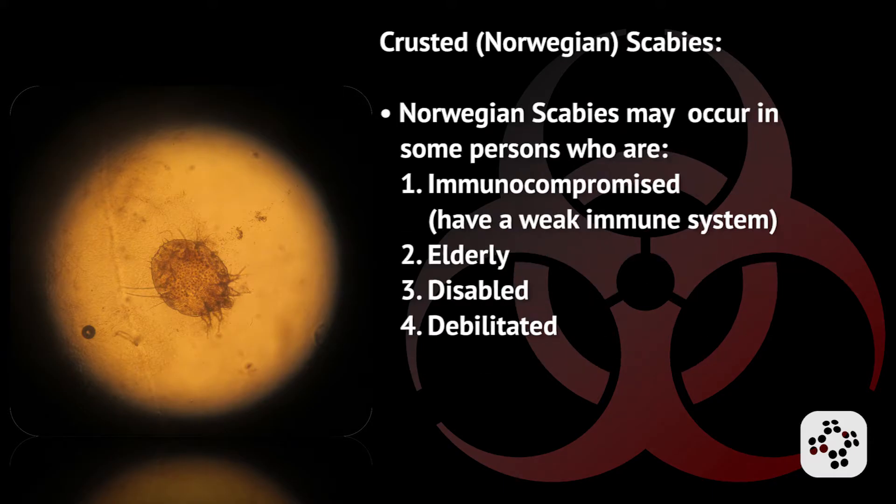Norwegian scabies may occur in some persons who are immunocompromised — meaning they have a weak immune system — as well as the elderly, the disabled, or the debilitated.